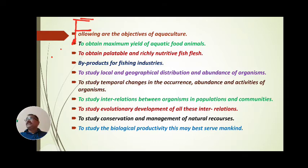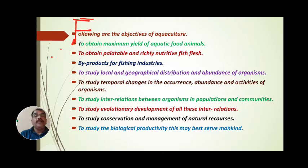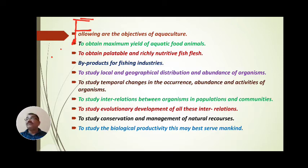Another objective is to study the interrelationship between organisms in populations and communities — which interrelations are occurring among these organisms in populations and communities, studied with the help of aquaculture. Also, to study the evolutionary development of all these interrelations — which evolutionary changes are taking place in these animals can be studied with aquaculture.